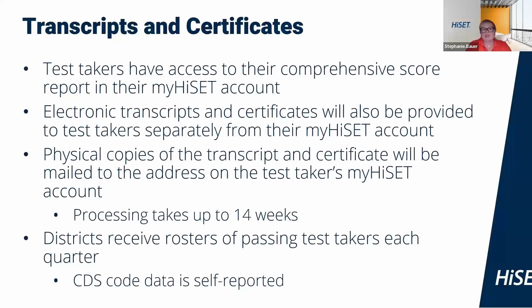Transcripts and certificates. Test takers have access to their comprehensive score report in their MyHiSET account. Electronic transcripts and certificates will also be provided to test takers separately from their MyHiSET account. Physical copies of the transcript and certificate will be mailed to the address on the test taker's MyHiSET account — it's very important that that address is filled out. Processing may take up to 14 weeks, although processing recently has been much quicker. Districts receive a roster of passing test takers each quarter; the CDS code data is self-reported, so if a student is not necessarily associated with a school, it's because the data is self-reported.